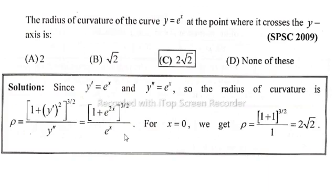So at x equals 0: 1 plus e to the power 0, which equals 1. So 1 plus 1, whole to the power 3 over 2, equals 2 to the power 3 over 2, which equals 2 times the square root of 2.